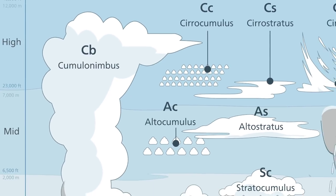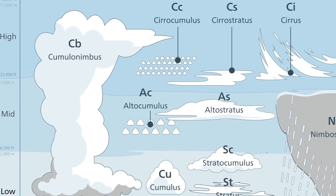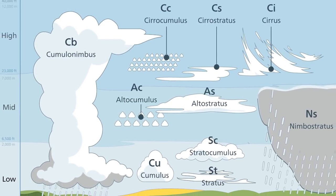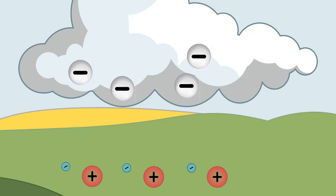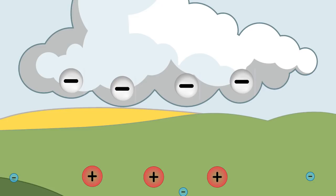Now, thunderclouds or cumulonimbus clouds, if you want to get technical, are incredibly tall. Some tens of thousands of metres, meaning that the bottom of the cloud is closer to the ground than it is to the top of the cloud. That means that electrons in the ground get repelled away by the negatively charged bottom of the cloud, leaving the ground with an ever so slight positive charge.